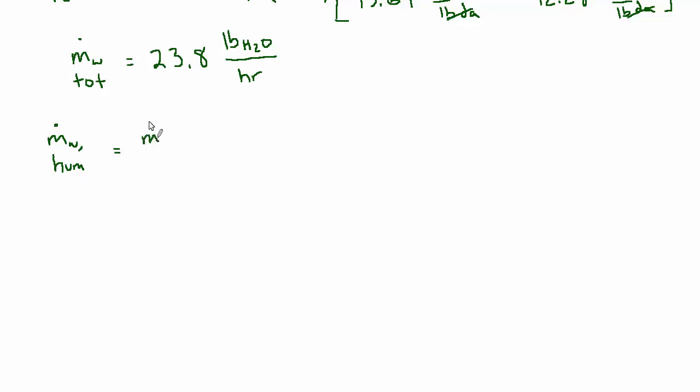the mass flow rate total minus the mass flow rate of the occupants. So that's 23.8 pounds per hour minus 6.67 pounds per hour, which equals 17.1 pounds per hour. And that's the answer to part A.